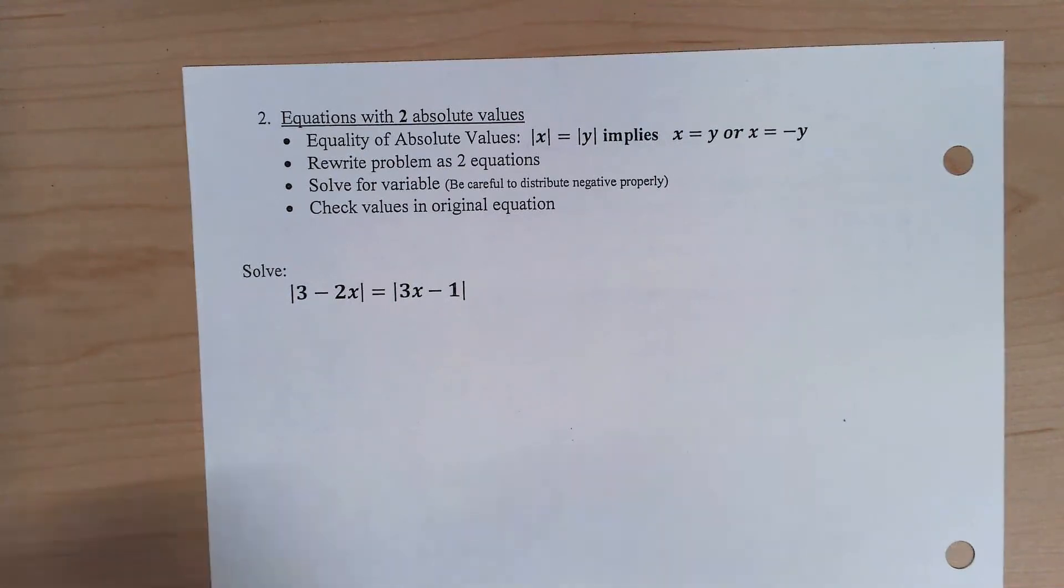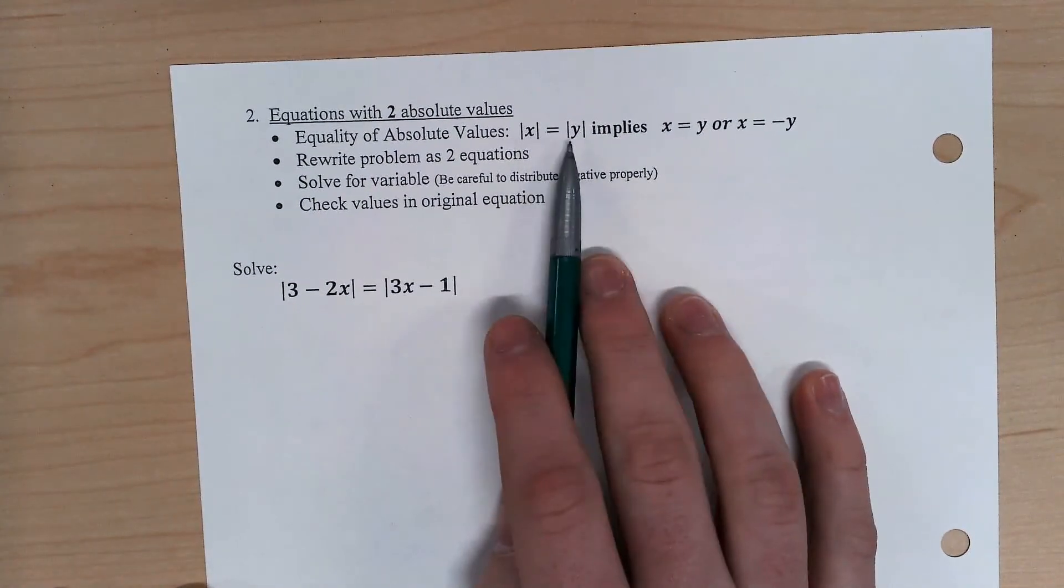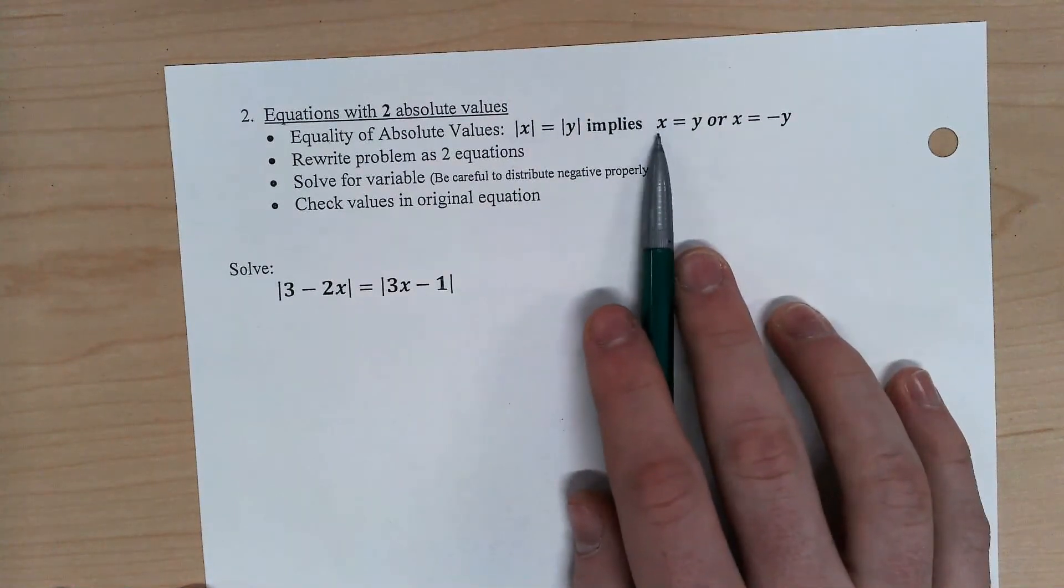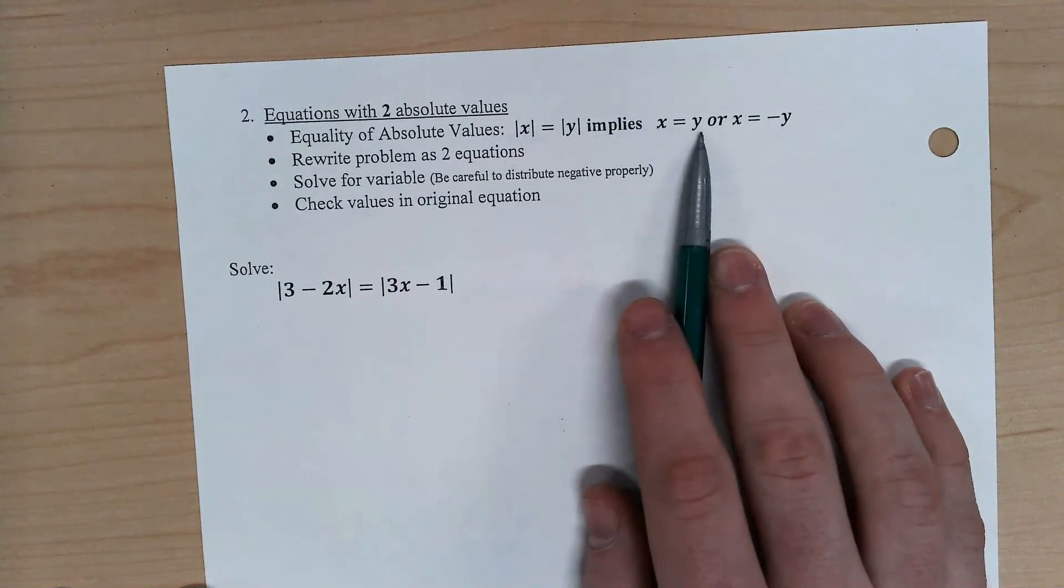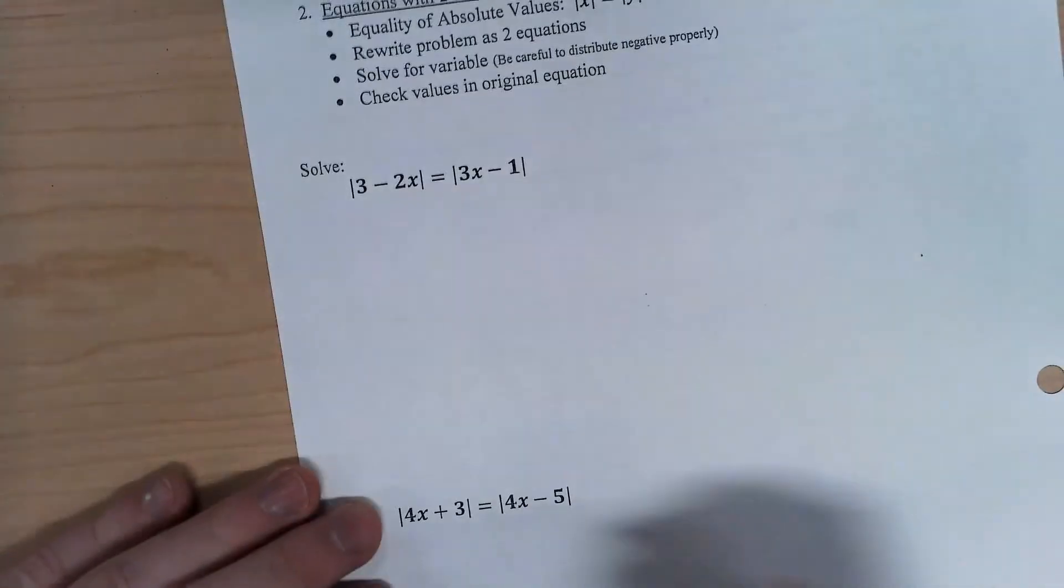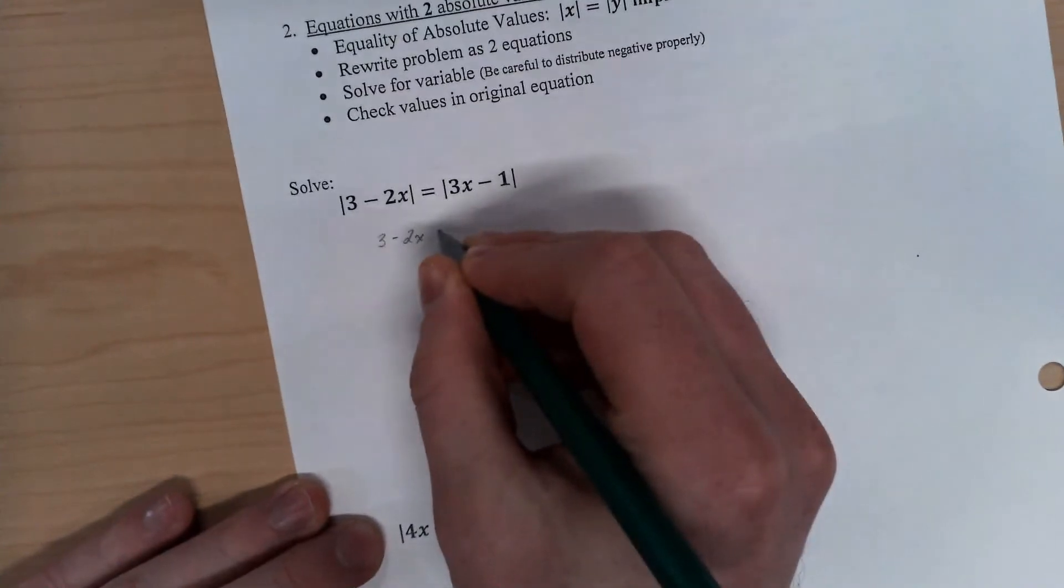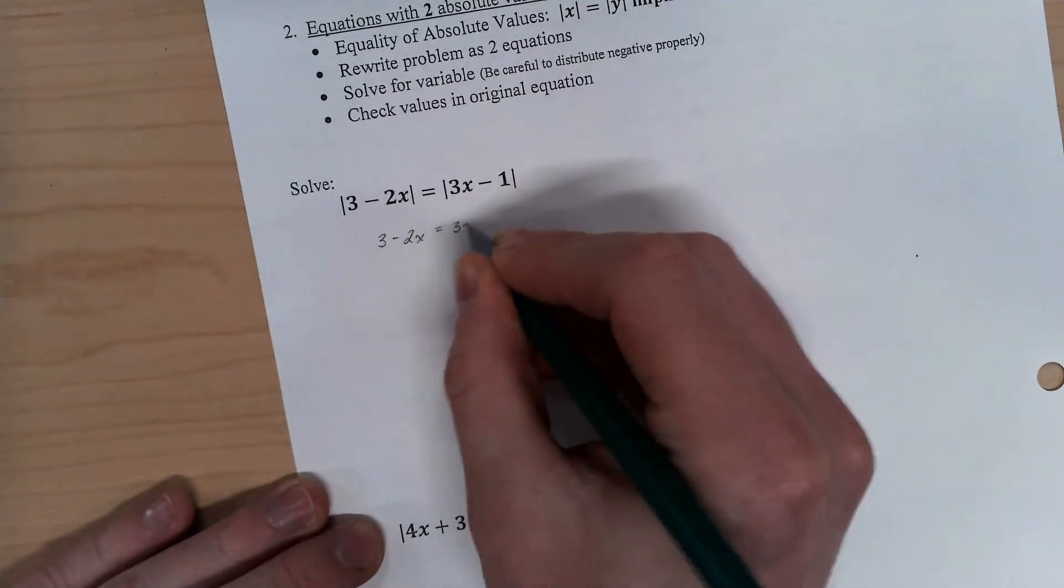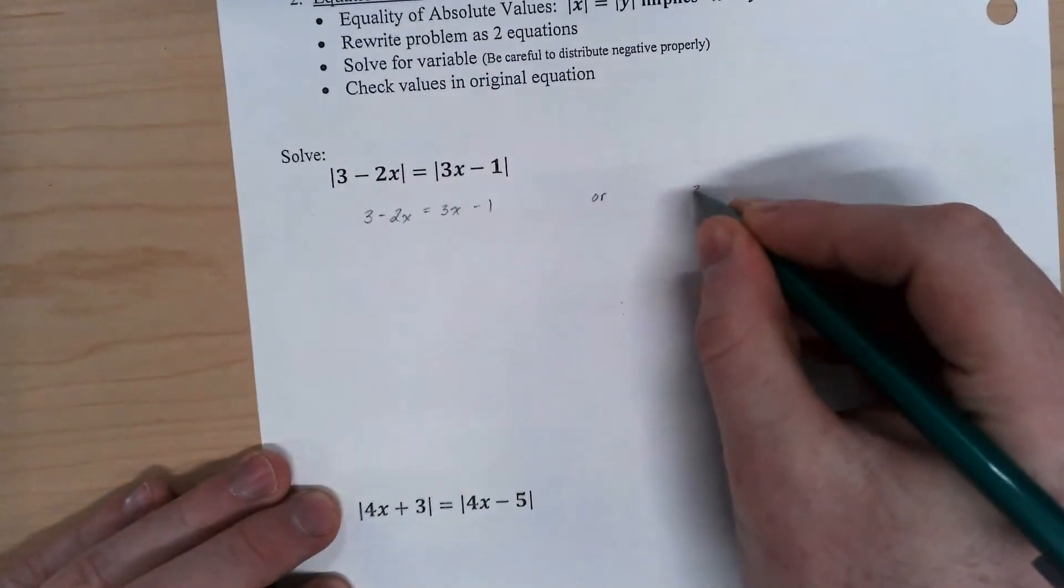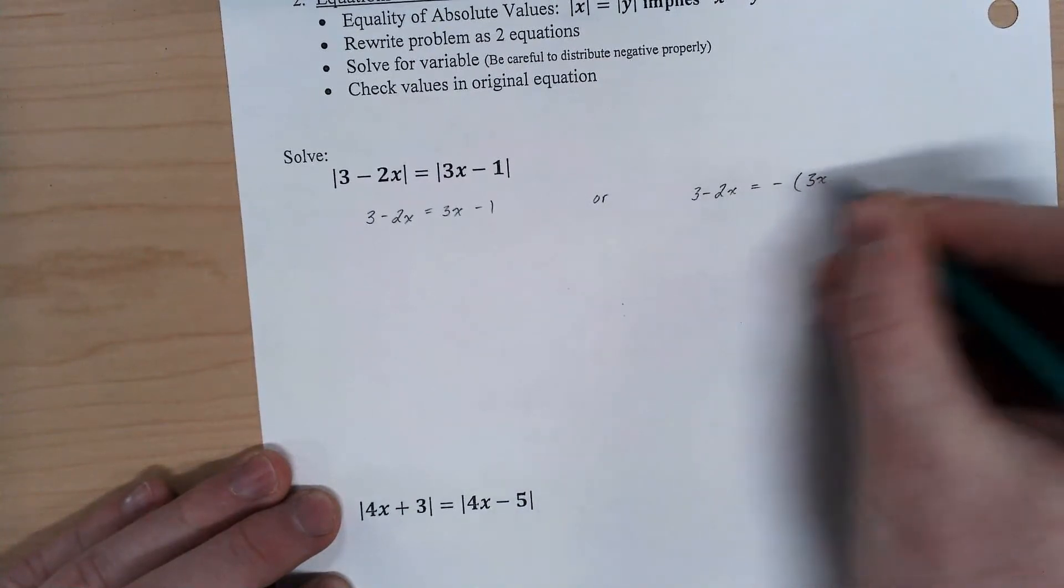So what we want to do is take our pair of absolute values and split it to the inside of one equals the inside of the other, or the inside of one equals the negative of the other. So those are our two versions. Here, I would say 3 minus 2x equals 3x minus 1, or 3 minus 2x equals negative 3x minus 1.